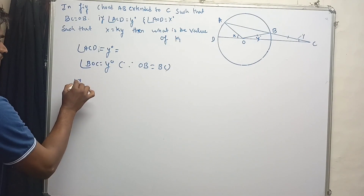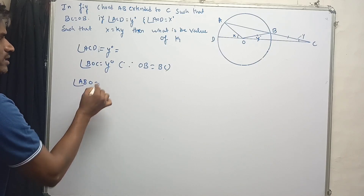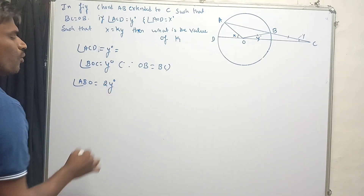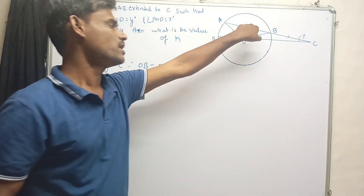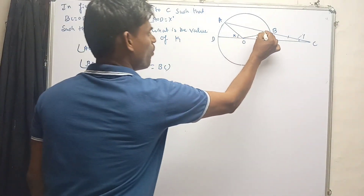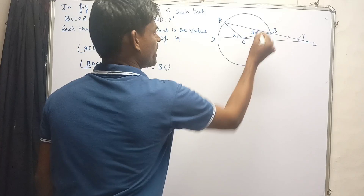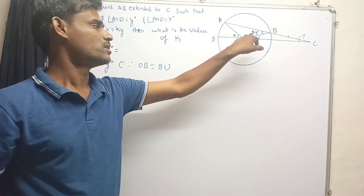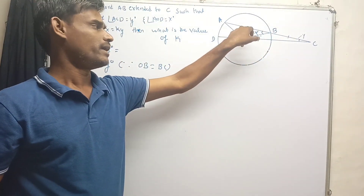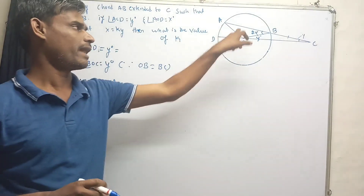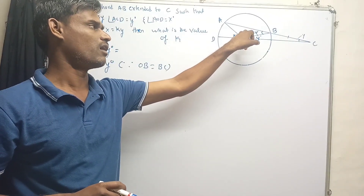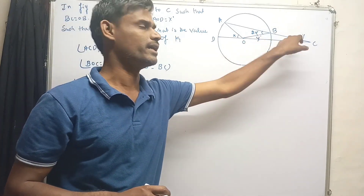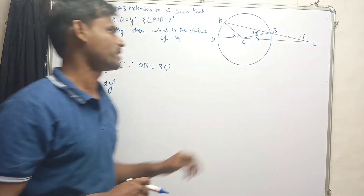So the value of angle BOC is y degrees. Then we can write that angle ABO equals two times y degrees, because angle ABO is an exterior angle to triangle OBC. In any triangle, an exterior angle is always equal to the sum of its two interior opposite angles.